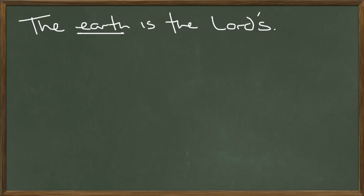Here we have the sentence, the earth is the Lord's. Earth, I've already underlined, is the subject of the sentence and it's in the nominative case. Then we have the verb is. We're not sure yet if it's a state of being verb, a linking verb, or an action verb. Well, by now you should know, if you know much about English grammar, you should know that this is not an action verb.